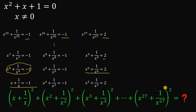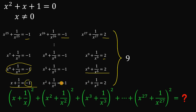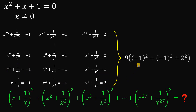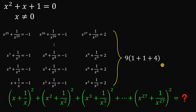The goal is to add all those squared values. We have 27 ÷ 3 = 9 groups, and each group contributes (−1)² + (−1)² + 2² = 1 + 1 + 4 = 6. So the total is 9 × 6 = 54. That is our answer.